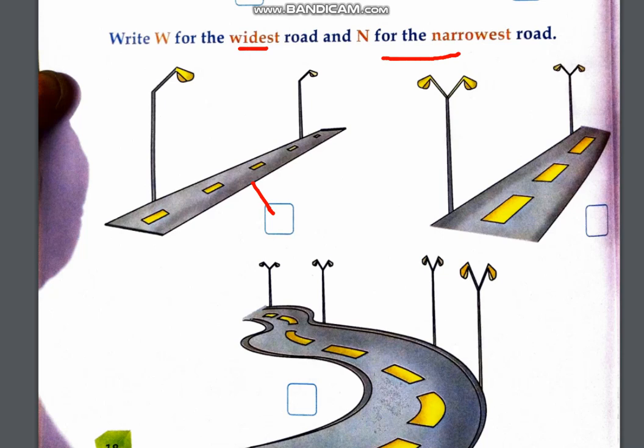Then we will write here N for the narrowest road, and this one is the widest road, so we will write here W for the widest road.